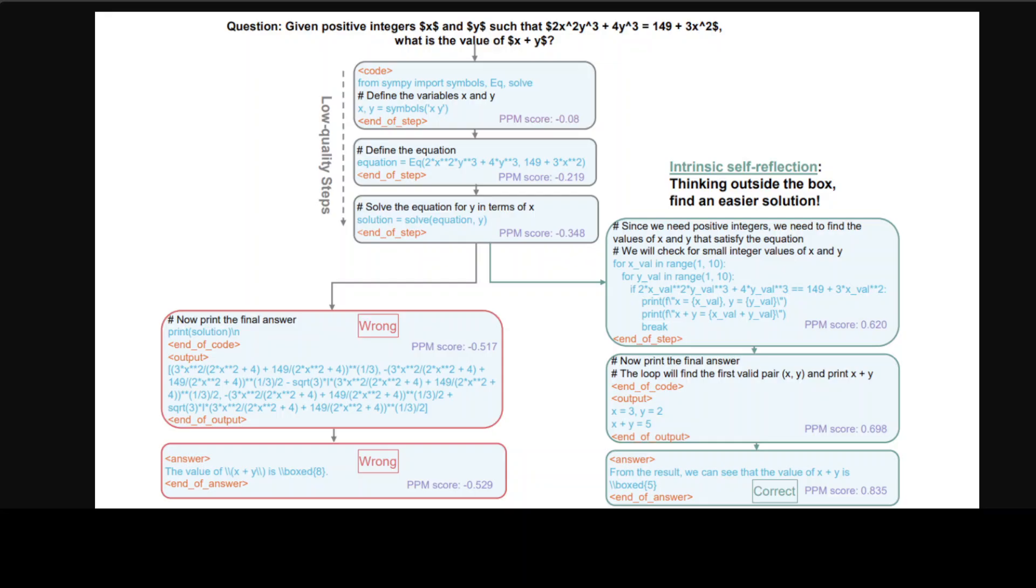This R-Star method leverages small language models with Monte Carlo Tree Search, as I just explained to you, to establish a self-evolutionary process.